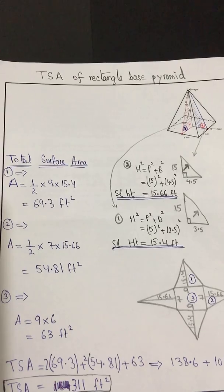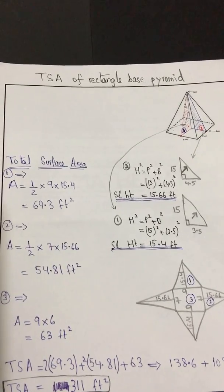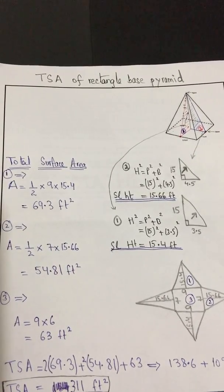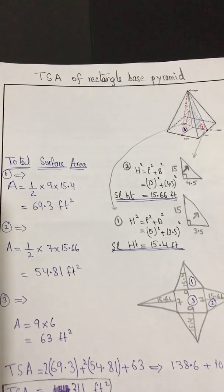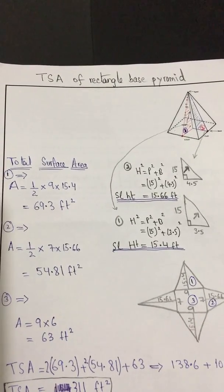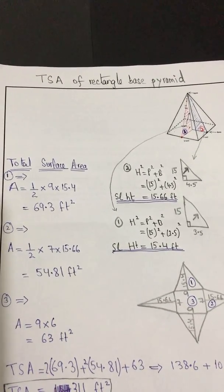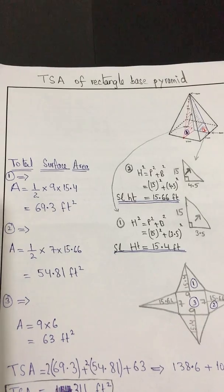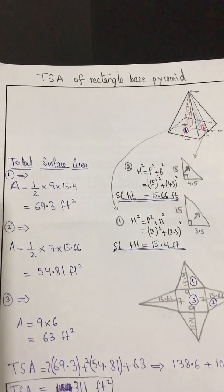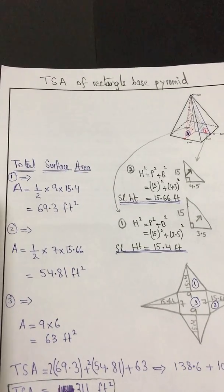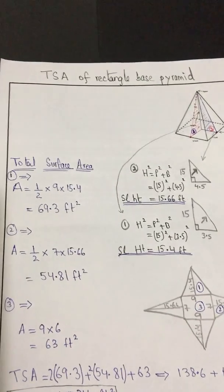We discussed in our online session that in order to find the total surface area we need two things: first, the dimensions of the base, and second, the slant height. In this question only the true vertical height has been given to us, so we will start off by finding the slant height.